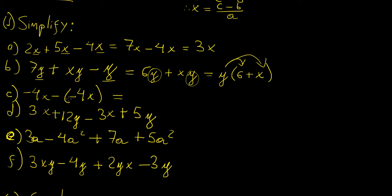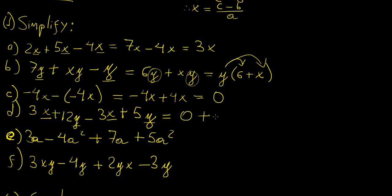For part c, we have minus 4x, but notice we have a minus times a minus, so those two become plus — minus 4x plus 4x — and in this case they cancel out and become 0. For part d, we have x terms and y terms: 3x minus 3x is 0, and then 12y plus 5y is 17y, so the whole expression just becomes 17y.